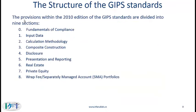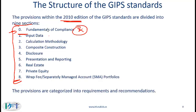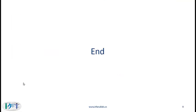The provisions within the 2010 version of the GIPS standards are divided into nine sections, numbered zero through eight. In the next reading, we will focus on section zero, which covers fundamentals of compliance, going through both its requirements and recommendations. For the other provisions, we will look at the details at Level 3. For each provision there are certain requirements and certain recommendations.